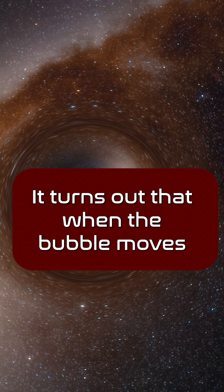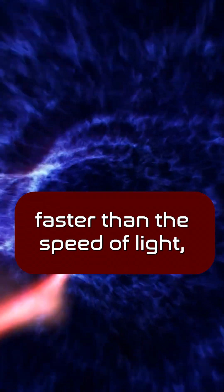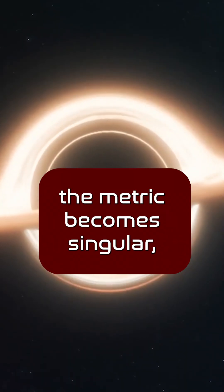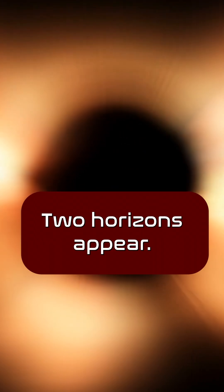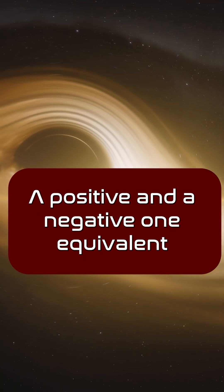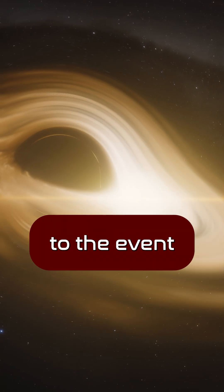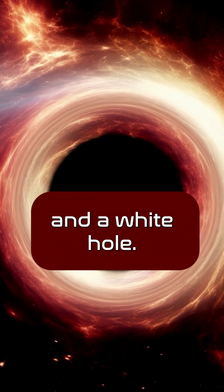It turns out that when the bubble moves faster than the speed of light, the metric becomes singular, similar to that of a black hole. Two horizons appear, a positive and a negative one, equivalent to the event horizons of a black hole and a white hole.